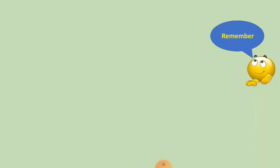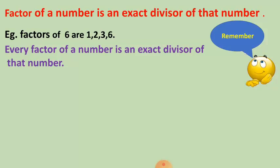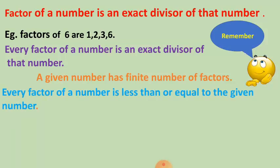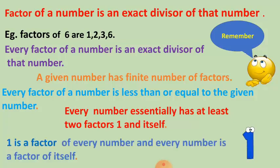Let's recap the topic of factors. A factor of a number refers to all the numbers which divide the number completely — they are the exact divisors of that number. Key properties: every factor of a number is an exact divisor; a given number has a finite number of factors; every factor is less than or equal to the given number; every number has at least two factors — one and the number itself. Hence, one is a factor of every number and every number is a factor of itself.